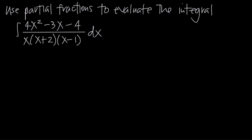We call it distinct linear factors because when you look at the denominator, you have three linear factors: x, x plus 2, and x minus 1. We call them linear because they all involve x to the first power. We call them distinct because they aren't equal to each other — a factor of x is not the same as x plus 2, which is not the same as x minus 1.